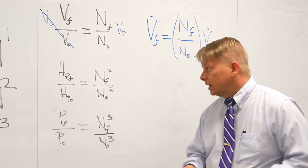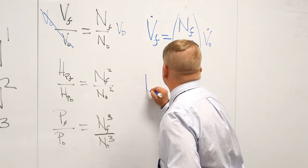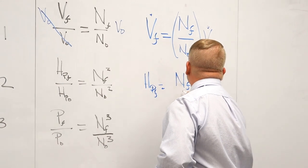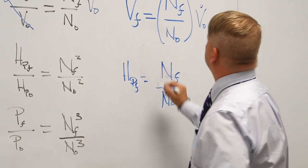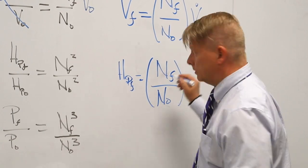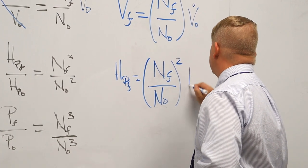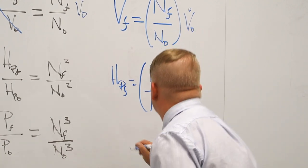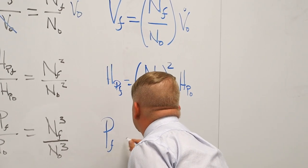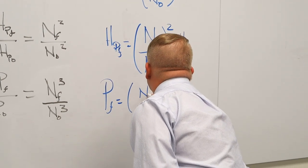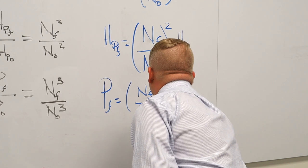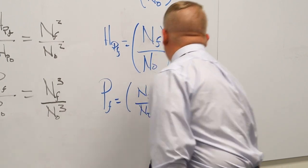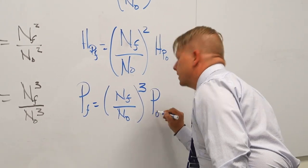So talk amongst yourselves, stare awkwardly at each other, and I'm gonna set up the remaining relationships. Pump head final is equal to final speed divided by initial speed squared times initial pump head. And then for power, final power is equal to final speed divided by initial speed cubed times initial power.